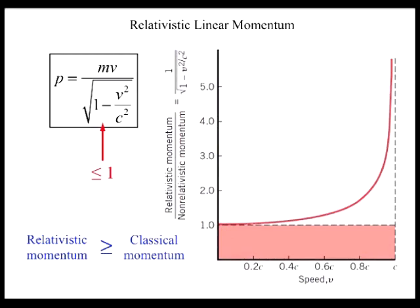The plot shows how the two quantities differ as the speed v increases through the ratio of the momentum magnitudes, relativistic to non-relativistic, as a function of v. According to the relativistic momentum equation, this ratio is just 1 divided by the square root of 1 minus v squared divided by c squared.